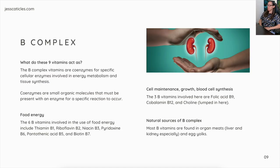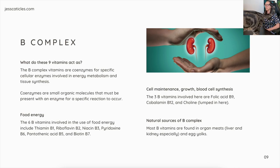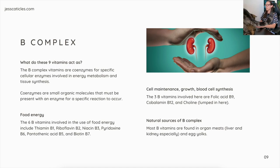B-complex: what do these nine vitamins do? B-complex vitamins are coenzymes for specific cellular enzymes involved in energy metabolism and tissue synthesis. Coenzymes are small organic molecules that must be present with an enzyme for a specific reaction to occur. The six B vitamins involved in food energy use are thiamine B1, riboflavin B2, niacin B3, pyridoxine B6, pantothenic acid B5, and biotin B7.